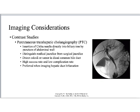For imaging considerations, we're going to need contrast to visualize this system, and there are several ways to get it there. One of the most common approaches for the biliary portion is percutaneous transhepatic cholangiography, or PTC — you stick a needle directly into the biliary tree via a puncture of the abdominal wall. It can distinguish medical jaundice from surgical jaundice, detect calculi or tumors in the distal common bile duct, and carries low complications. Essentially we squirt contrast throughout the biliary tree to see what's going on.